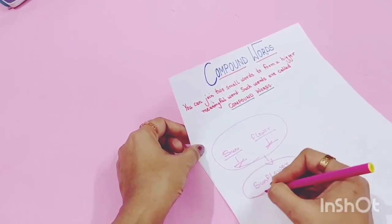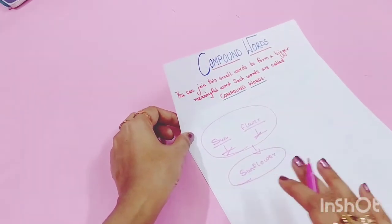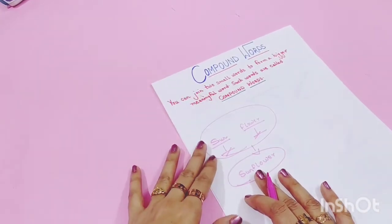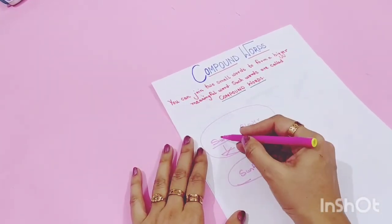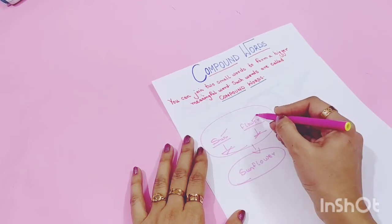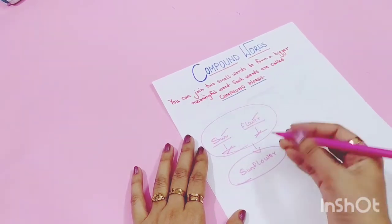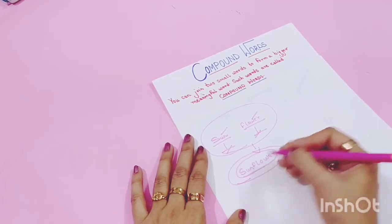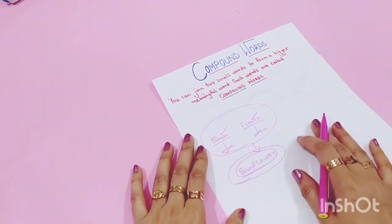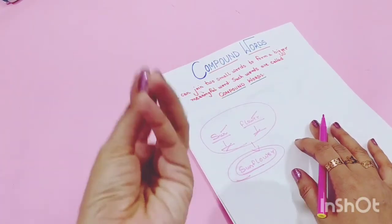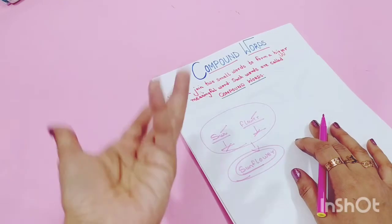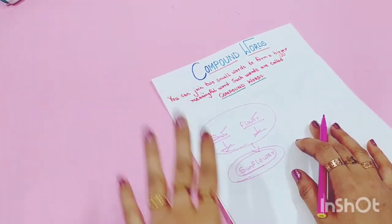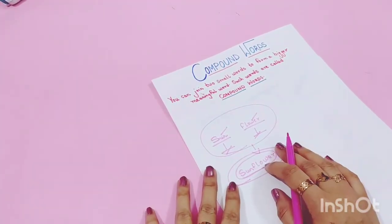We make a totally new word, which has a new meaning. Sun is the sun and flower is the flower. Together, we have made a sunflower.